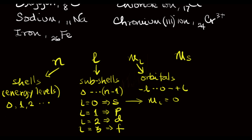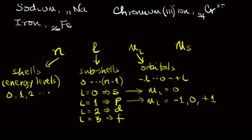When L is 1, M sub L will be minus 1, 0, and plus 1 — that's 3 orbitals. When L is 2, M sub L will be minus 2, minus 1, 0, plus 1, plus 2 — the 5 orbitals in the d subshell.